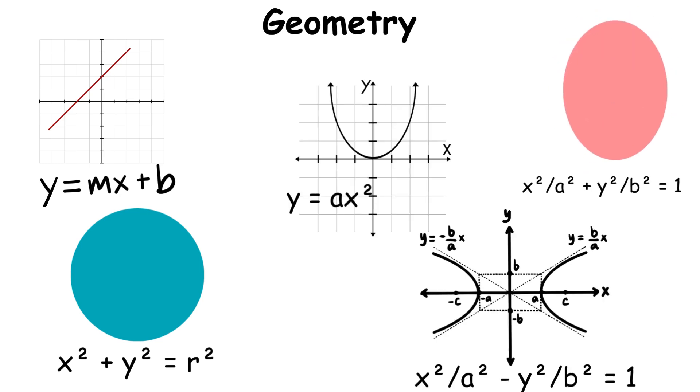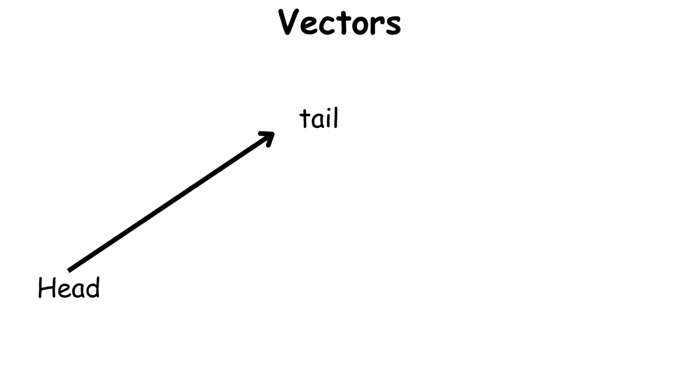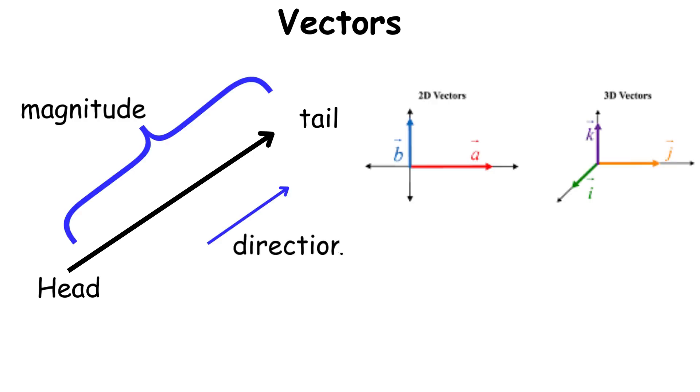But here's where it gets really interesting. Vectors are basically cooler versions of regular numbers, since they have both magnitude and direction. A vector in three-dimensional space is written as, or using unit vector notation.